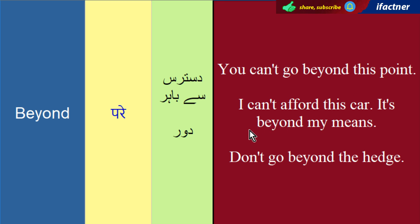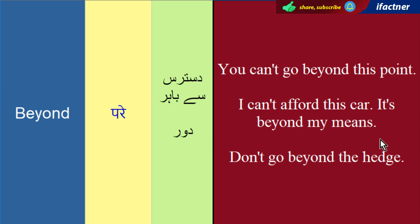Ya agar koi cheez meri aukaat se zyada hai, mehengi hai, toh us waqt hum kehtay hain 'beyond my means.' Jaisa ki: 'I can't afford this car. It's beyond my means.' Mein is gaari ko afford nahin kar sakta. Yeh meri dasteras se baahir hai, yeh meri aukaat se baahir hai — yaani woh bohut mehengi hai aur mere paas utnay paise nahin. Toh mein 'beyond my means' use karunga. I can't afford this car. It's beyond my means.